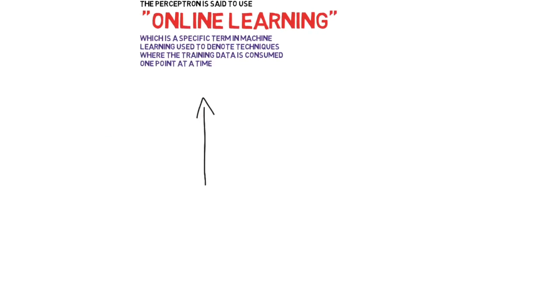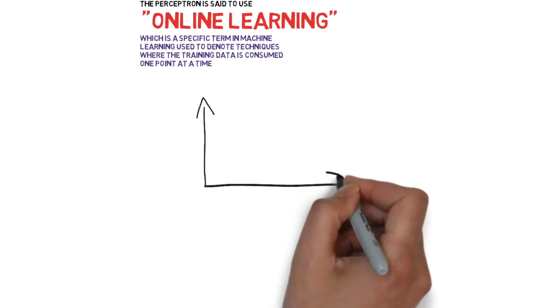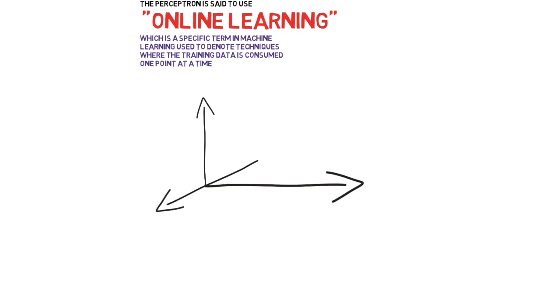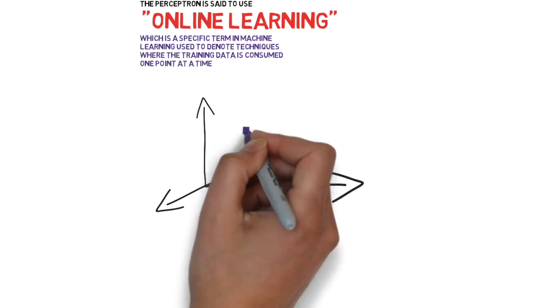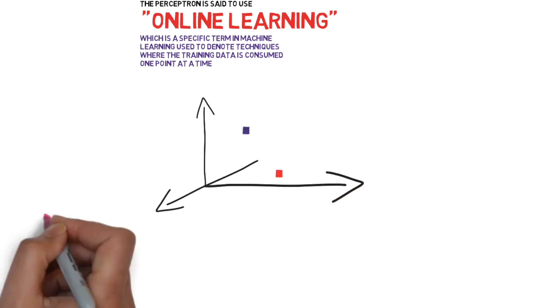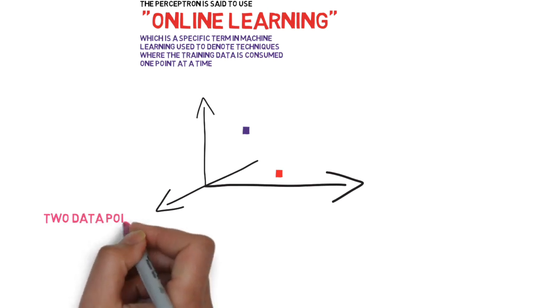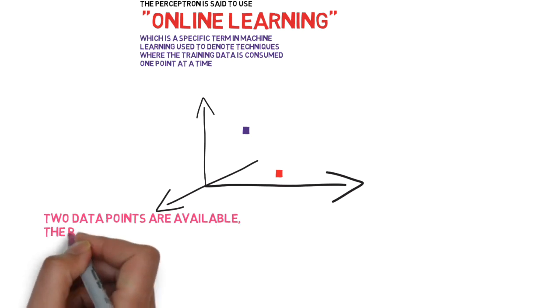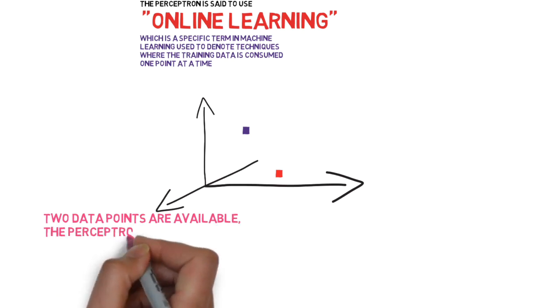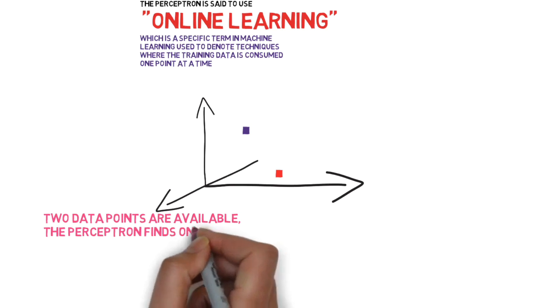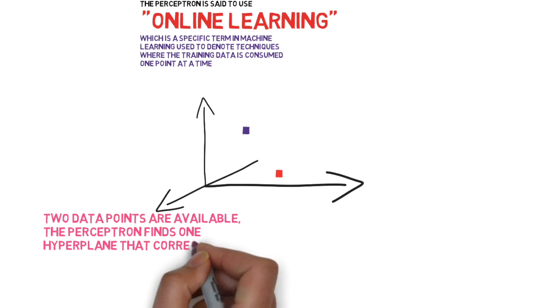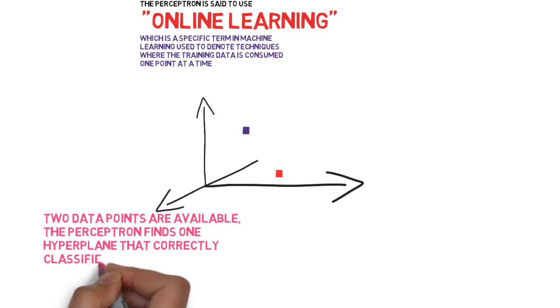Here's a visual representation of how a perceptron would work. It starts with two data points. It takes these two points. It figures out a plane, any hyperplane, which separates these two points. So perceptron would just find any hyperplane that separates these two data points, not necessarily the one that cuts right through the middle.